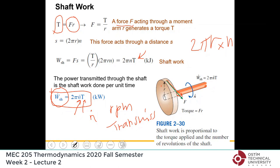This is why transmissions exist in cars: at low speed (low rpm) you need large torque, so you use a low gear. At high speed a small torque suffices, so you switch to a high gear.